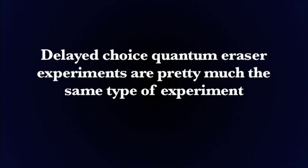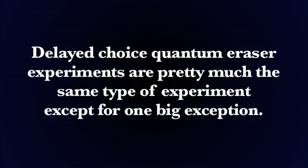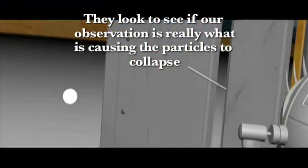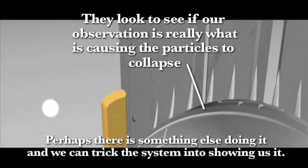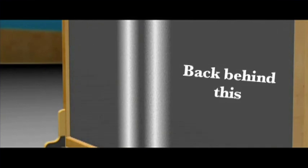Now delayed choice quantum eraser experiments are pretty much the same type of experiment, except for one big exception. They look to see if our observation is really what is causing the particle to collapse. Perhaps there is something else doing it, and we can trick the system into showing us it. So instead of placing a detector at the slit, we replace it past this, where the particles land.